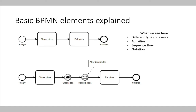Using small icons inside the events, we can further annotate what the event is about. For example, the black letter symbol represents information being sent, and the white letter symbol represents information being received. There is also the possibility to annotate different shape types with additional information — for example, we expect that the pizza is received after 25 minutes. These are the basic building blocks, and we can already model basic processes with them.